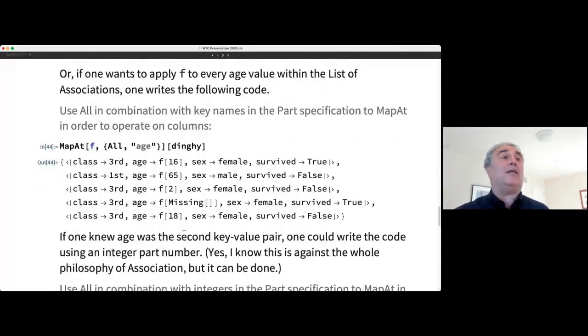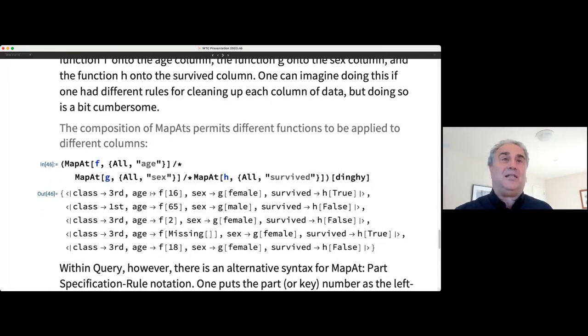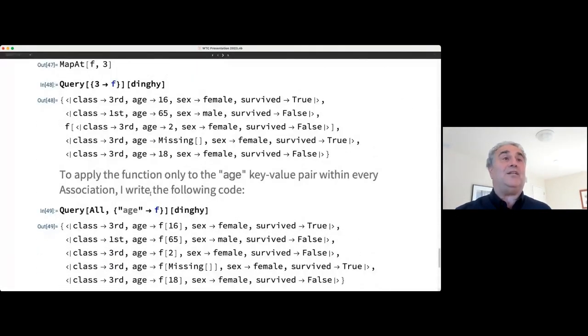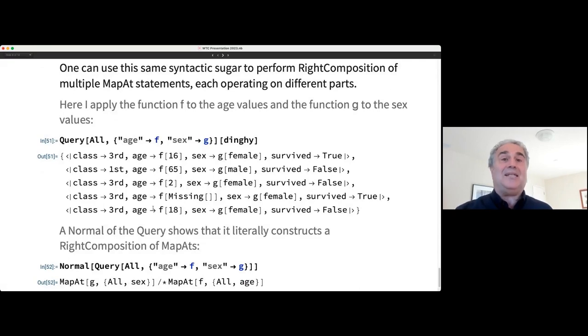The fourth complication is map at. And let me skip down to, I think what you need to see, which is, you know, here's what you could do. You could say, all right, first I'll apply age. I'll apply F to all the age data. Then I'll apply G to all the sex data. Then I'll apply H to all the survival data. And yes, you can write that code. But it's kind of ugly, I think. And so query has a convenience function. And let me just skip down to where that is. Here we go. This is saying, look, take all the rows and for age, apply F to it. And for sex, apply G to it. And if I then look at the normal form of that, what you're going to see is it does the work of composing the sequence, the right composition of the map ats.